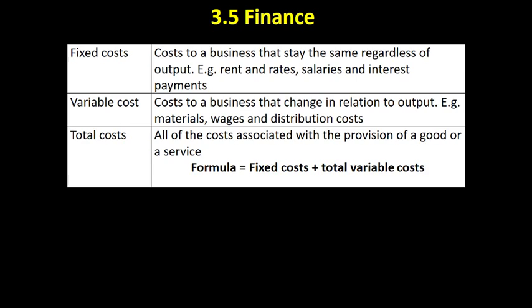Fixed costs remain the same regardless of whether I make zero loaves of bread or a million loaves of bread. For example, the rent on my factory — let's say it's £10,000 a month. If I make zero loaves, I've still got to pay that rent. If I make a million loaves, the rent remains at £10,000. It's just like paying rent on a flat: it doesn't matter how many nights a month you're there, if you've signed an agreement to pay it, the costs don't change regardless of output.